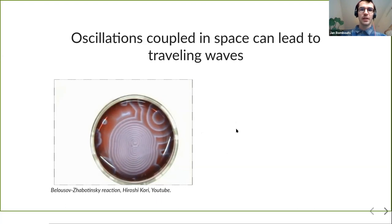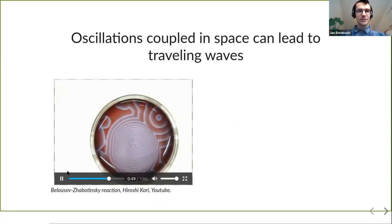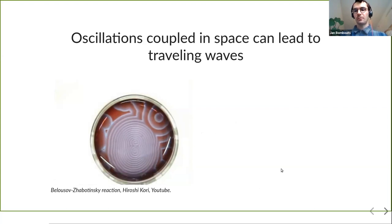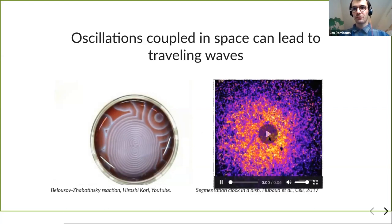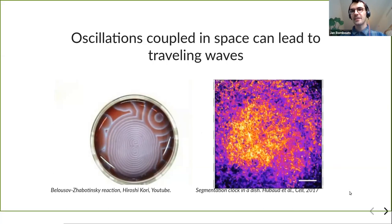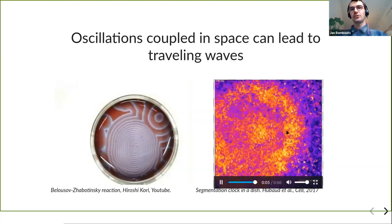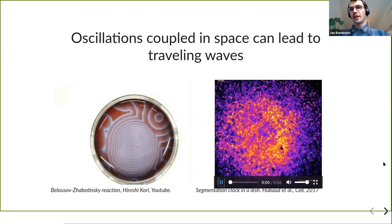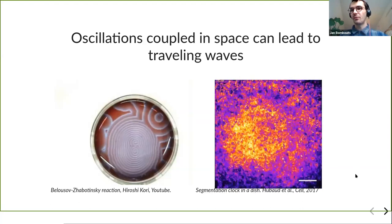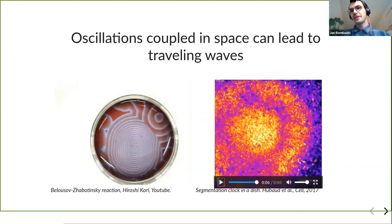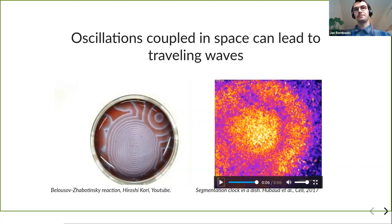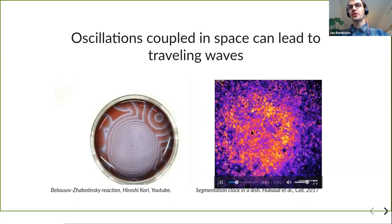A second example is from biology, taken from a recent paper in Cell. The medium here is actually cells, and each cell shown in color has a fluorescent marker for a certain protein. These cells exhibit what is called the segmentation clock, a biological system that leads to the formation of vertebrae during development. You can also see here that the waves and oscillations seem to originate from somewhere and then produce outgoing waves.